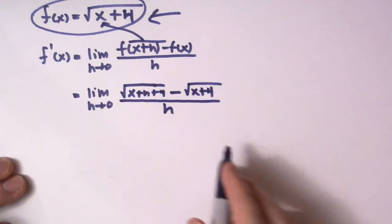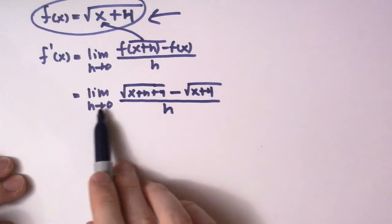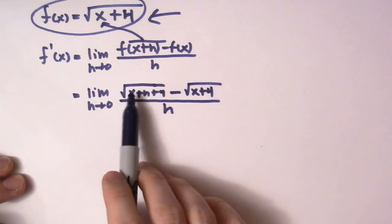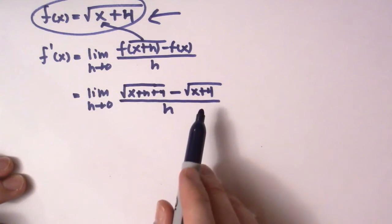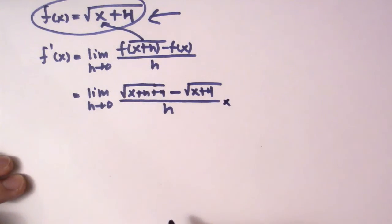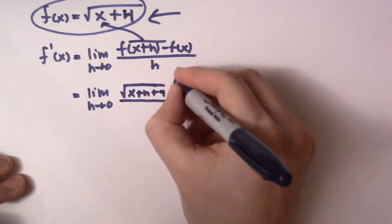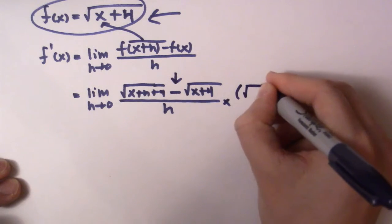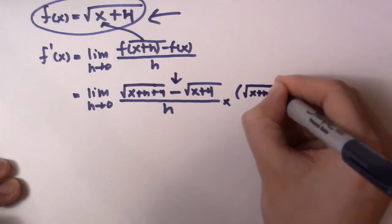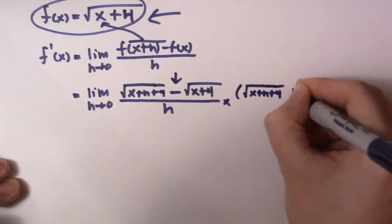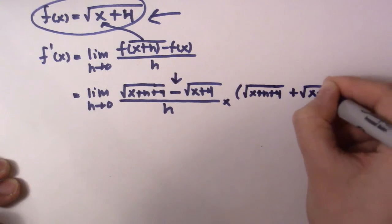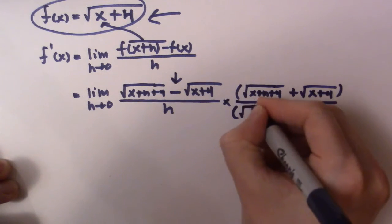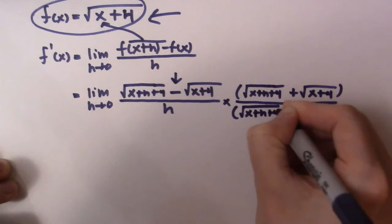Any time you have a limit — especially a limit to a finite number — we're going to have to use the conjugate in this situation. We multiply by the conjugate. All the conjugate does is change the sign in the middle. So I'm going to multiply the numerator and denominator by the square root of x plus h plus 4, plus the square root of x plus 4, just like that. I have to multiply top and bottom to make sure I don't change the equality of the expression.